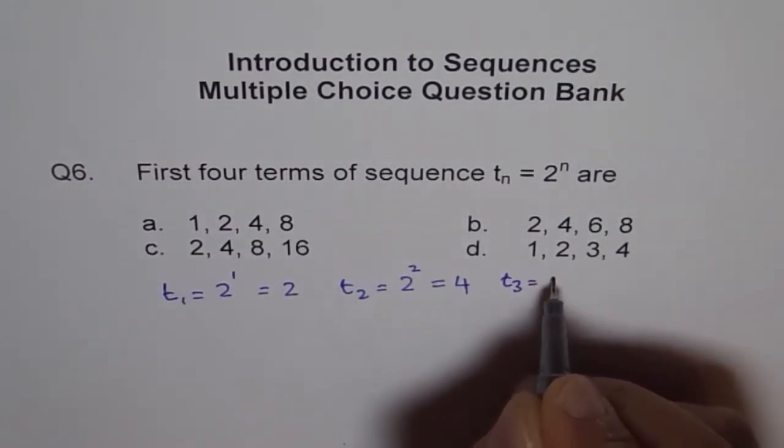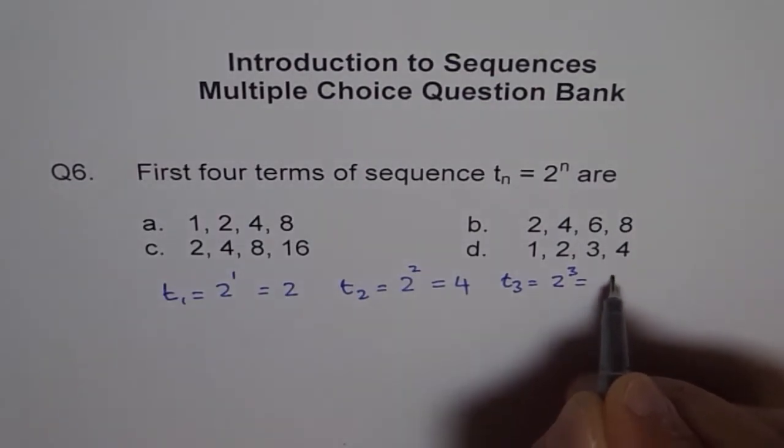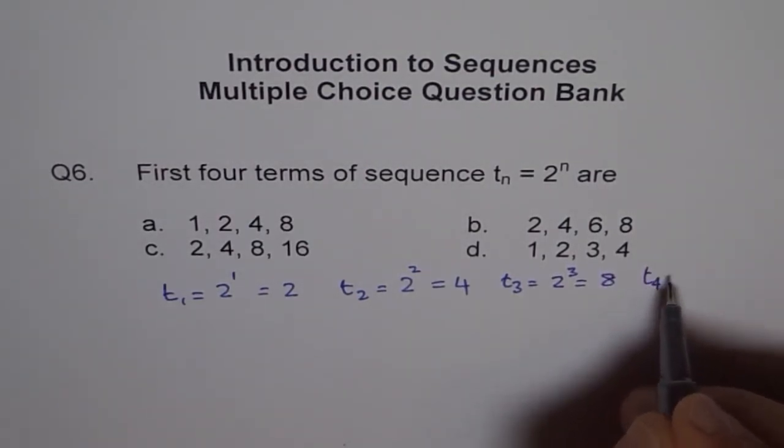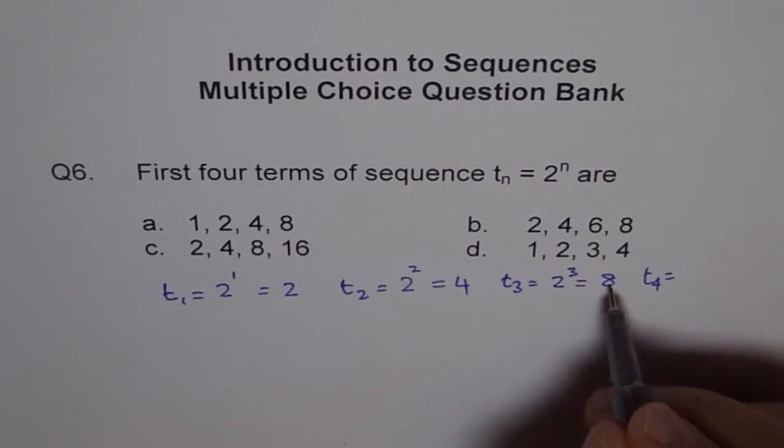T3 equals 2 to the power of 3 which is 2 times 2 which is 8. And T4 equals 2 times 8, right.